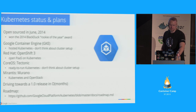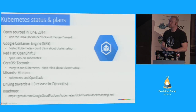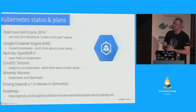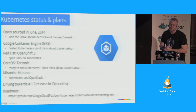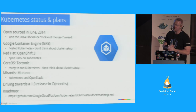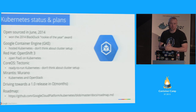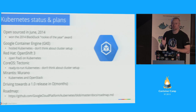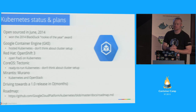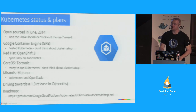Kubernetes was open-sourced almost a year ago. In 2014 we won the Black Duck Rookie of the Year award — Docker also won that award a couple of years before. This year we launched Container Engine, which is hosted Kubernetes. Red Hat is working on OpenShift 3, a PaaS built on top of Kubernetes. CoreOS announced Tectonic, prepackaged Kubernetes on CoreOS. Mirantis announced Murano, an OpenStack plugin using Kubernetes. Adoption is great. We're driving towards a 1.0 release this summer. Our roadmap is public — go take a look.